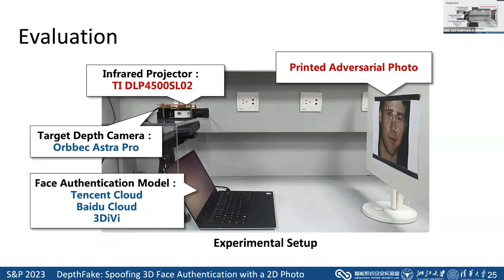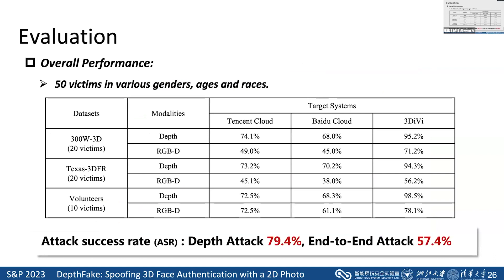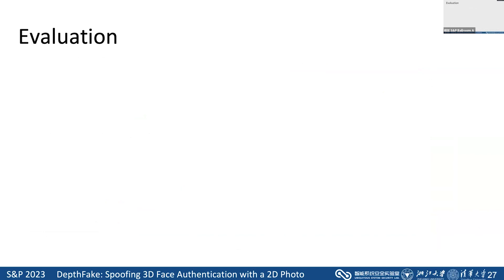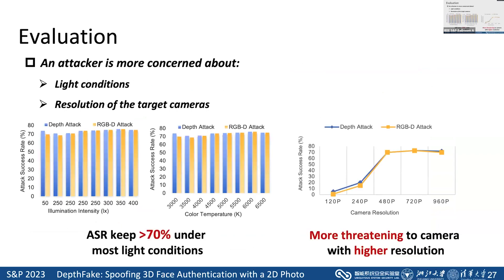Here is the experimental setup. We select 50 victims with various genders, ages, and races to evaluate our attack. Overall, DepthFake can achieve a high attack success rate against various victims and target systems. When conducting an over-the-air attack, an attacker is more concerned about the impact of lighting conditions and the resolution of the target cameras. After experiments, we find DepthFake can be deployed in most lighting conditions and is more threatening to high-resolution cameras, which is actually the trend of camera development.